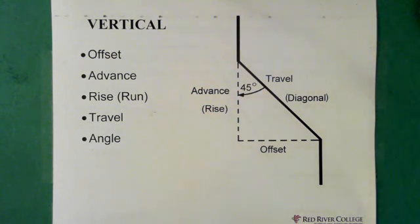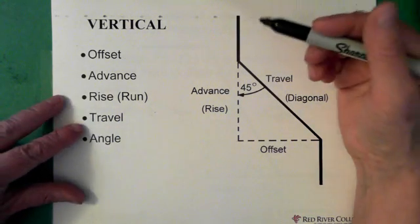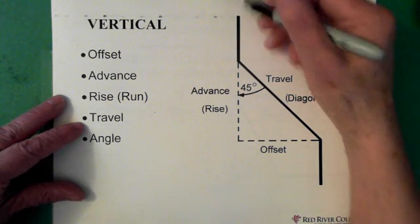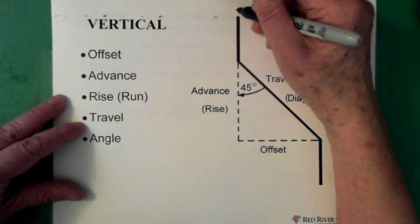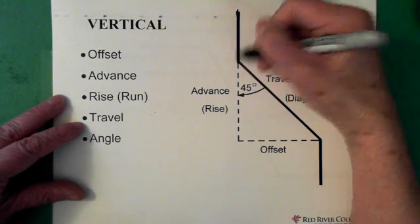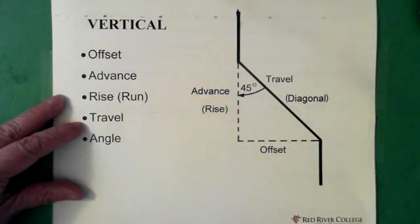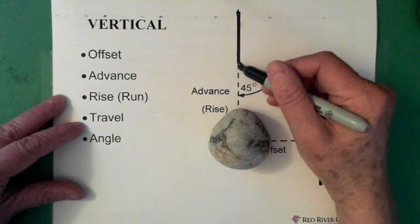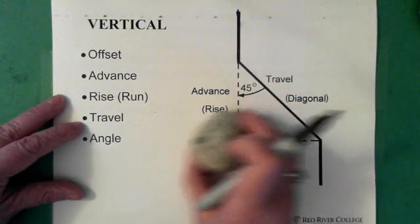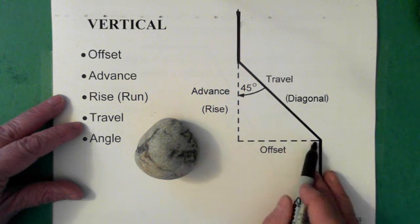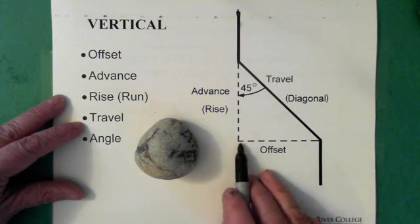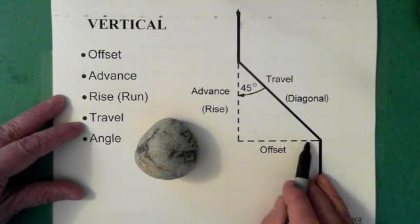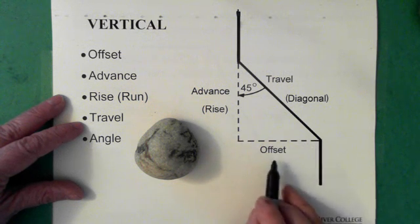So I'm just going to be talking about what the different terms mean. Here we have a vertical offset. We have a pipe that's running vertically. We have an obstruction, so we're moving downward here and we have an obstruction. And because of that obstruction, we have to move the pipe. And we choose to move it this distance. And that distance that it's moved, the horizontal distance that it's moved, is called the offset.